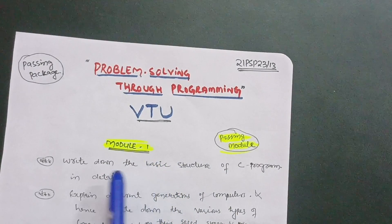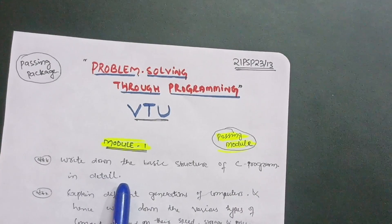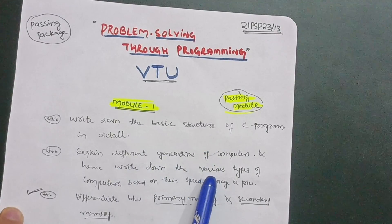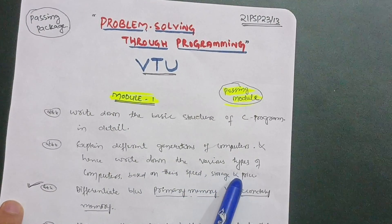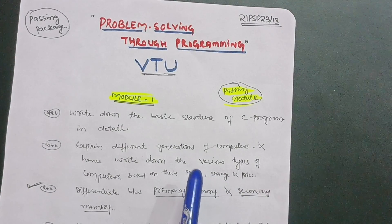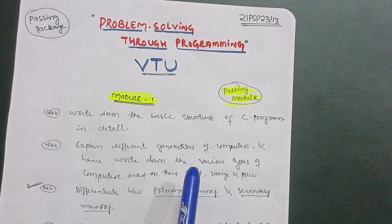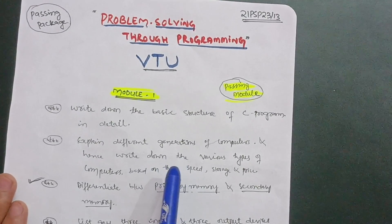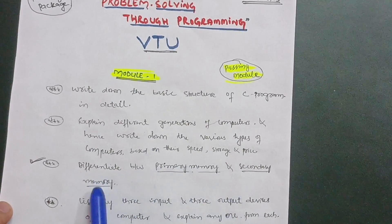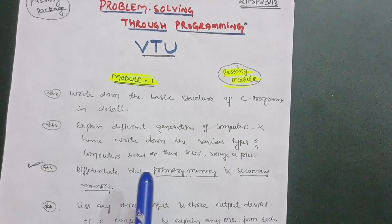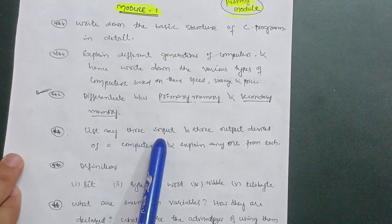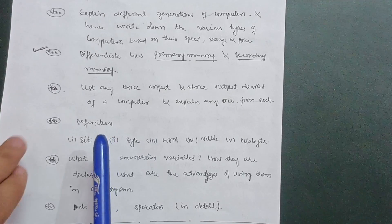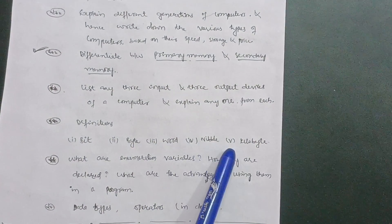The first passing module covers theoretical concepts. First, write down the basic structure of a C program in detail — this is the most important question. Next, explain different generations of computers and write down the various types of computers based on their speed, storage, and price. Sometimes they will ask about the evolution of computers. Next, differentiate between primary memory and secondary memory — this is a super important question. Also, list any three input and output devices of a computer and explain any one from each.